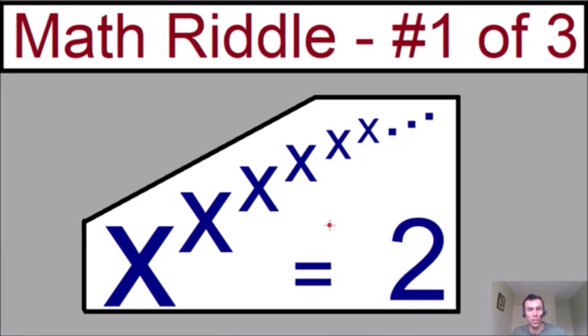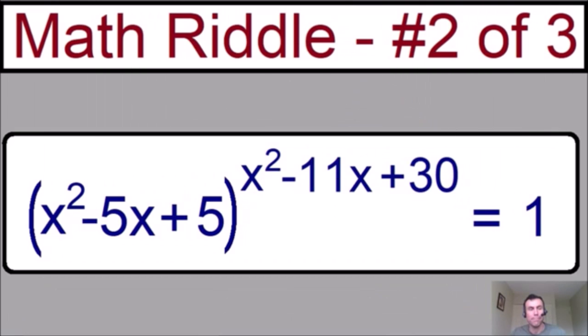Let's move on to riddle number two. Here we have a trinomial, x squared minus 5x plus 5. And on top of this trinomial, we have another trinomial, x squared minus 11x plus 30, as an exponent.